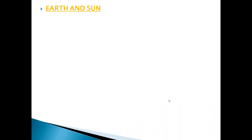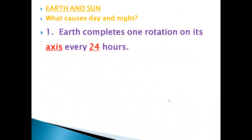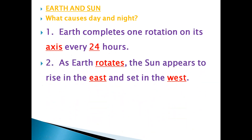Earth and Sun - What causes day and night? Number one: Earth completes one rotation on its axis every 24 hours. There are two blanks - the first answer is 'axis' and the second is '24'. Number next: As earth rotates, the Sun appears to rise in the east and set in the west.